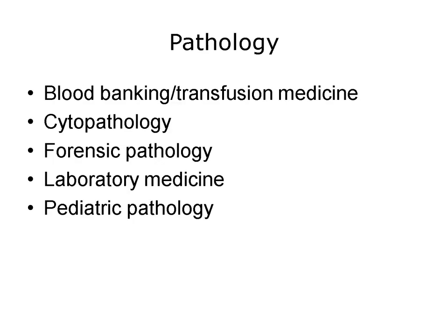A general pathologist conducts autopsies and uses a microscope to examine slides of tissues to look for abnormalities. Specialty areas within laboratory services include blood banking and transfusion medicine, which supervises blood donation collection and identifies blood types for compatibility between donor and recipient. A cytopathologist examines slides, often of surgical samples, to look at abnormalities in cells, for example to rule out or confirm a cancer diagnosis. A forensic pathologist or medical examiner looks for causes of death in patients who die suddenly or violently. Laboratory medicine includes chemistry, hematology, and microbiology. Pediatric pathologists specialize in the pathology of infants, children, and adolescents.